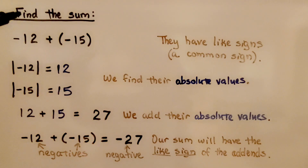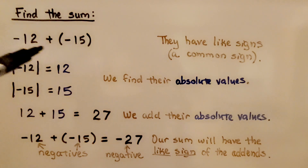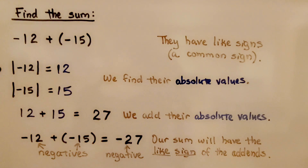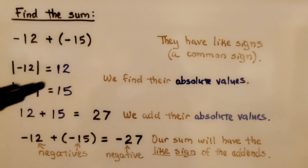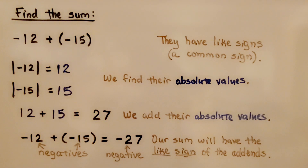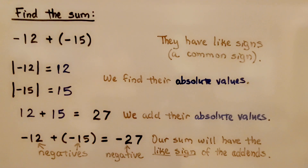It's telling us to find the sum. We have a negative 12 plus a negative 15. They have like signs — a common sign — they're both negative. We find their absolute values: the absolute value of negative 12 is 12, and the absolute value of negative 15 is 15. We add their absolute values: 12 plus 15 is equal to 27. Our sum will have the same sign as the addends — both are negative — so our sum will be negative 27.